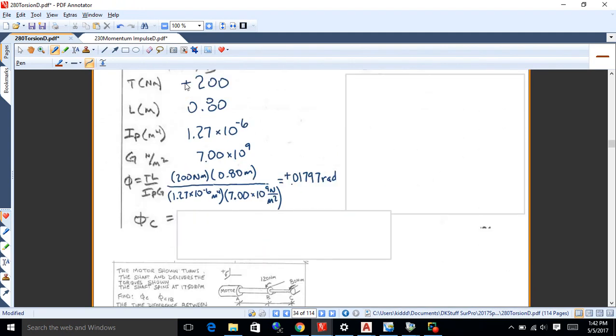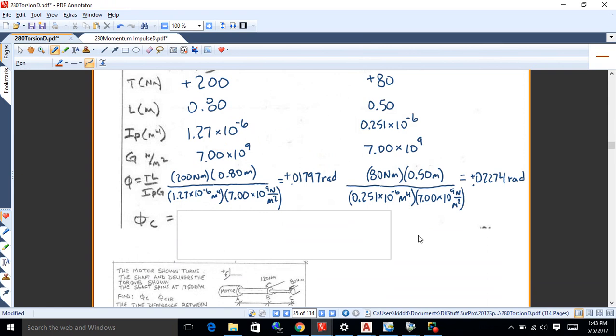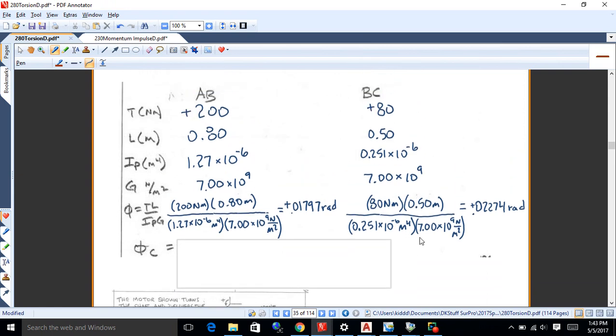All right. So once you got them, you know, I like doing my little tables here. So I just put everything in, T in newton meters, L in meters, I in meters to the 4, and G in newton per meter squared. Just be sure you got consistent units. And then just plug everything into phi is TL over IG. And for that first one, I'll get positive 0.01797 radians. And that's positive. And then you can do the same thing for BC. Okay.